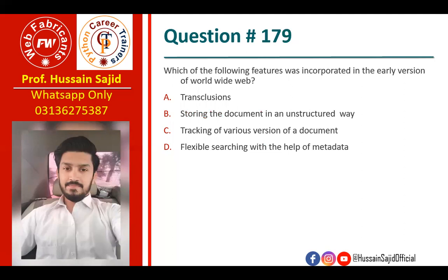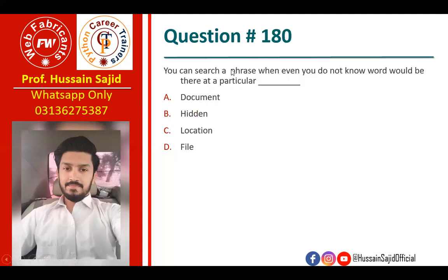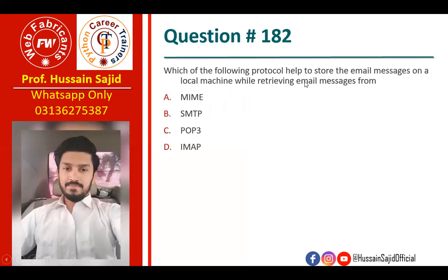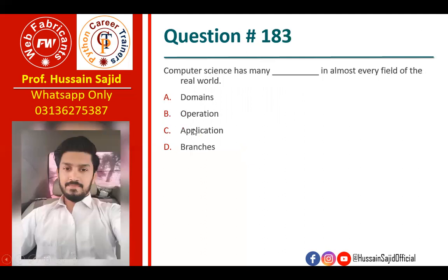The early version of the World Wide Web had a quick, unstructured way to navigate documents, and you can search for a phrase even when you do not know the exact word. TCP is more reliable than UDP but less efficient. POP3 is the protocol that stores email on the local machine while retrieving email messages.